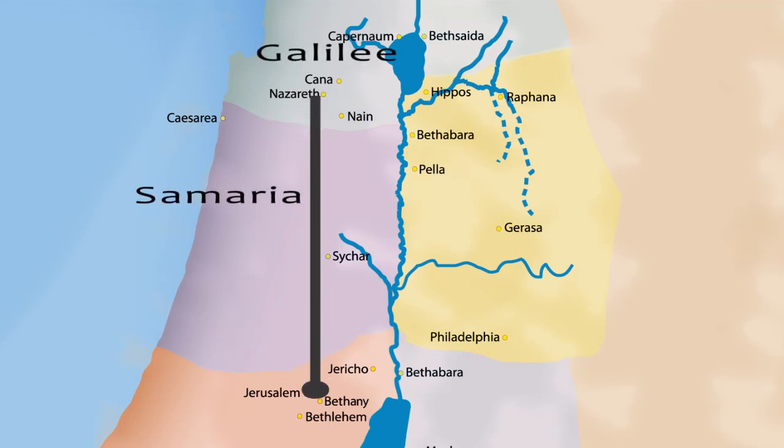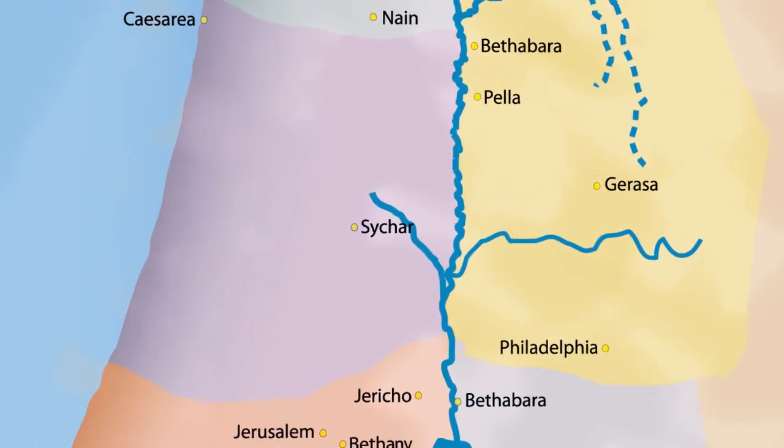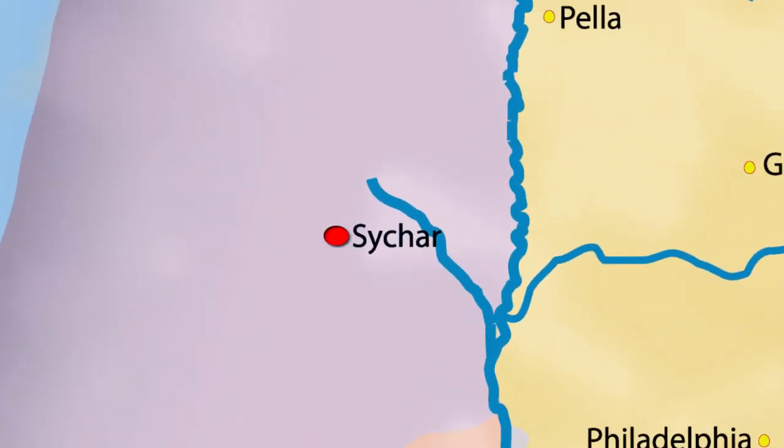Jesus passed through Samaria and sat down there and had a talk with the Samaritan woman. The important town in this district was Sychar, where Jesus met the Samaritan woman. The Samaritans themselves acknowledged that Jesus is indeed the Savior of the world (John 4:42). Two other important towns in Samaria are Caesarea, which was a settlement for the Roman governor, and Shechem.